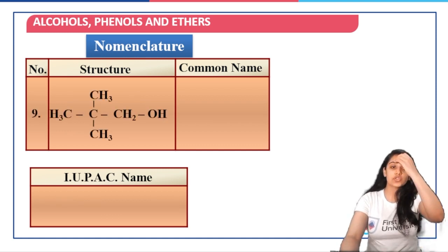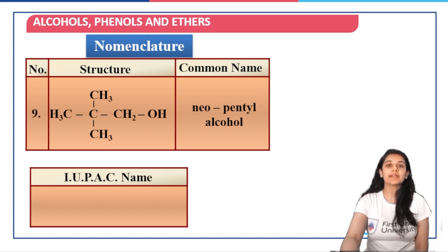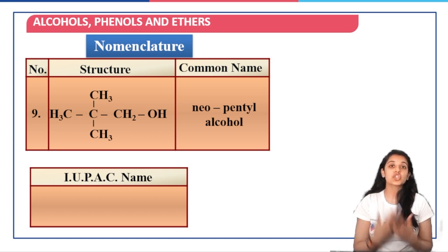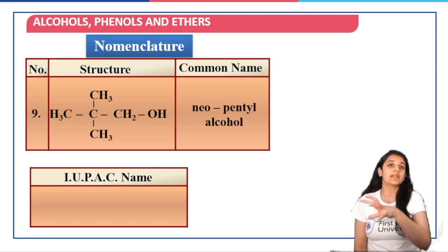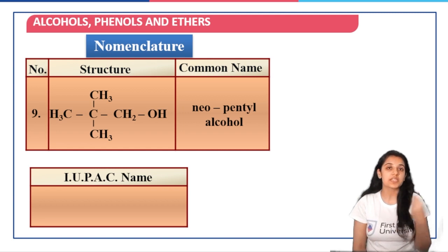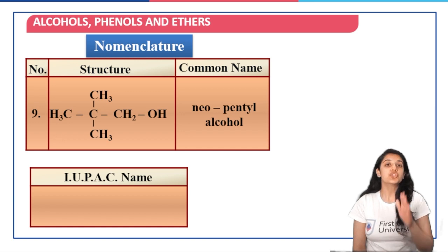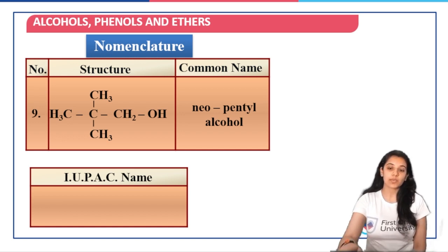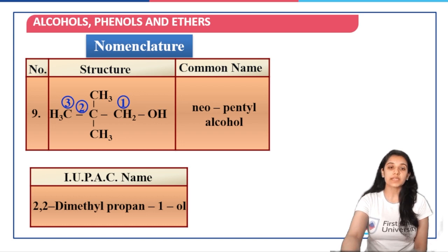Next is a primary alcohol with the common name neopentyl alcohol. These common names are very important because sometimes in a question the structure will not be given to you — you will just be given the name 'neopentyl alcohol reacts with this to give the product.' So you should be very well aware of these common names. The IUPAC name for it: the parent chain has three carbon atoms, so propane, with two methyl groups at the second carbon, giving 2,2-dimethylpropane-1-ol.